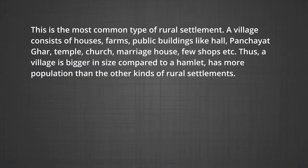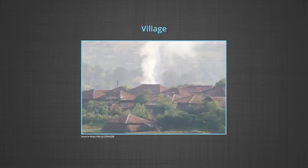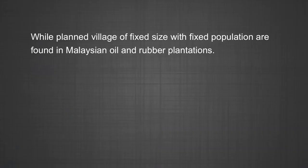Village is the most common type of rural settlement. A village consists of houses, farms, and public buildings like a hall, panchayat ghar, temple, church, marriage houses, and a few shops. A village is bigger in size compared to a hamlet and has more population. The size of a village may vary — some villages in Kerala and Maharashtra have 17,000 persons, while only 250 persons live in some villages of Jammu and Kashmir in India. Planned villages of fixed size with fixed population are also found in Malaysian oil and rubber plantations.